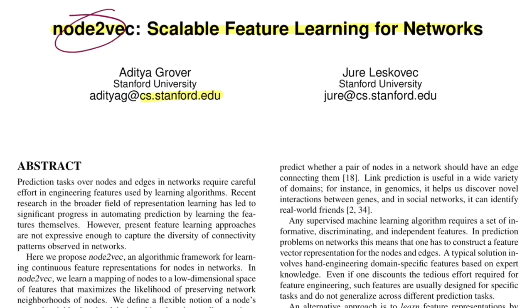Node2Vec uses a similar idea of generating node embeddings in a graph using random walks. The main contribution over DeepWalk is introducing a controllable factor for how you generate random walks. They introduce a search strategy that trades off between how deep you want to go in a graph during your random walk, versus sampling just from the neighbors.